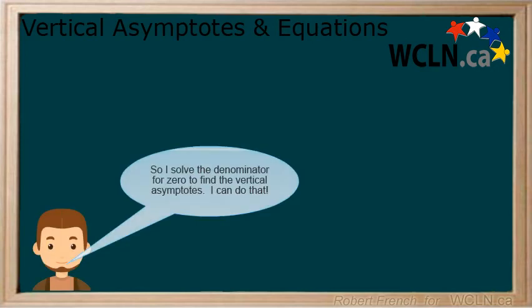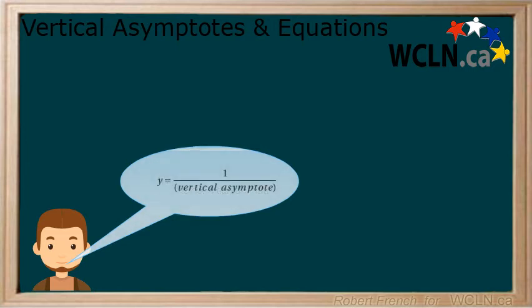When looking at a rational equation, we determine the vertical asymptotes by solving the denominator for 0. The x values that cause the denominator to equal 0 are the locations of our asymptotes. You have probably done this before when you learned about restrictions.